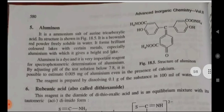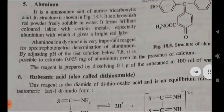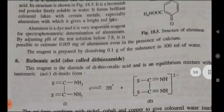Fifth — Aluminon: it is an ammonium salt of aurintricarboxylic acid, whose structure is shown in figure 18.5. It is a brownish-red color, freely soluble in water. It forms brilliantly colored lakes with certain metals, especially aluminium, with which it gives a bright red lake. Aluminon is a dye and a very important reagent for the spectrophotometric determination of aluminium. By adjusting the pH of the test solution below 7.8, it is possible to estimate 0.005 mg of aluminium even in the presence of calcium. The reagent is prepared by dissolving 0.1 gram of the substance in 100 mL of water.